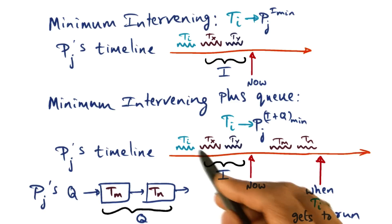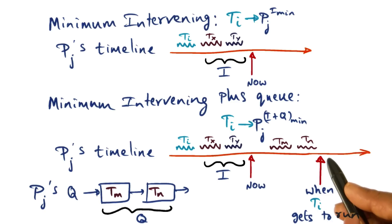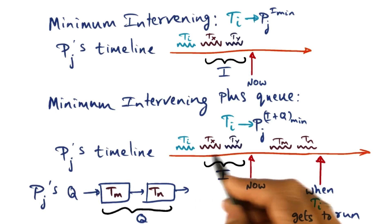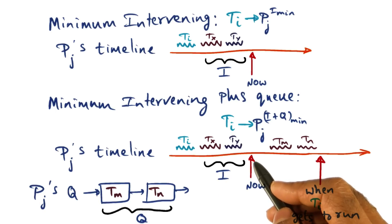the reality is that ti is not going to run immediately, but it is going to run much later in time. And by the time it gets to run, two other threads that are already sitting in the queue of pj, they're going to run. And therefore, the cache will be more polluted than what we thought it was going to be at this point of time.